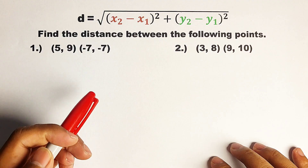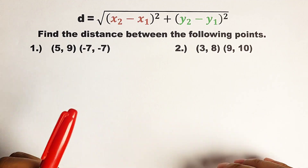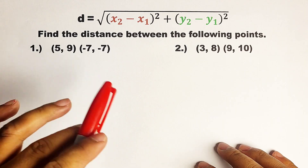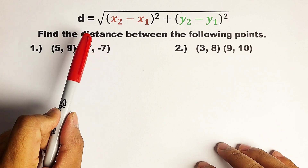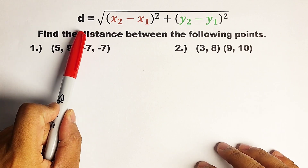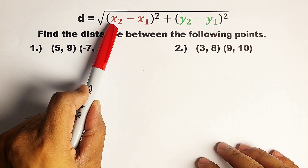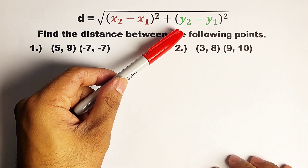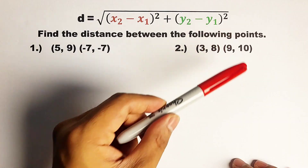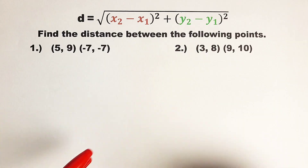Hi guys, it's me, Teacher Ghosn. In today's video, we will talk about how to find the distance between two given points on a Cartesian plane. So without further ado, let's do this topic. Now here, at the top of this paper, this is the distance formula: d is equal to the square root of x sub 2 minus x sub 1, raised to the second power, plus y sub 2 minus y sub 1, raised to the second power. This x sub 1, y sub 1, x sub 2, y sub 2 are the coordinates of the two points that we need to find the distance of.